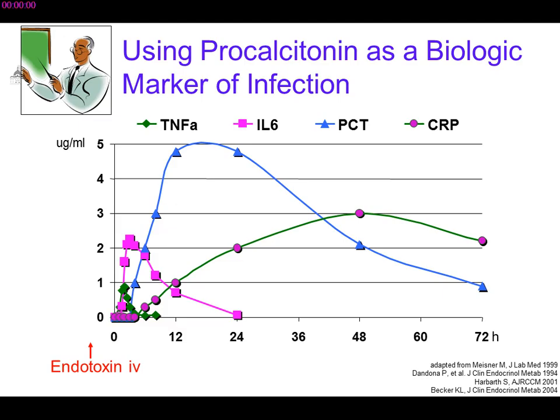The second advantage: the peak concentration of initial procalcitonin reflects the body's inflammatory response — evidence of the severity of the infection and its impact on the host organism. The third advantage is that when everything is alright, marker levels decrease very quickly.